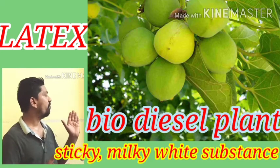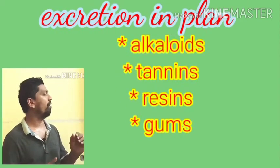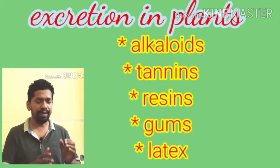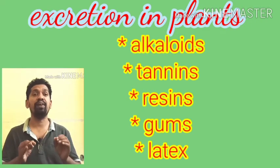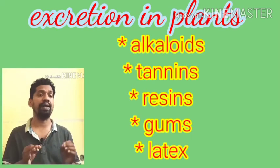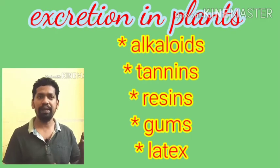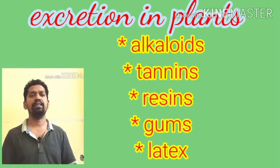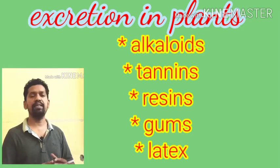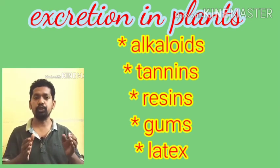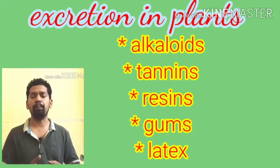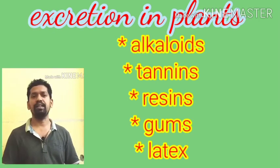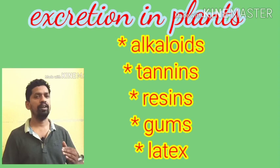These are the different types of plant wastages — alkaloids, tannins, resins, gums, and latex. All of these are wastages stored in various parts of the plant, but due to their economic importance, we use them in different sectors. Though the plant doesn't have any specific organ for excretion, it has the power to manage its wastages successfully. This concludes the lesson on Excretion in Plants. Thank you.